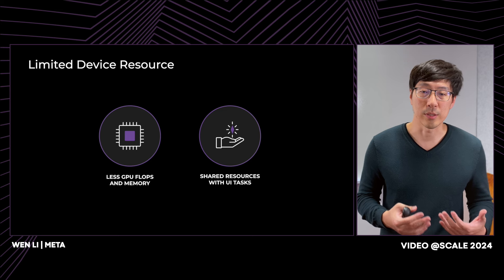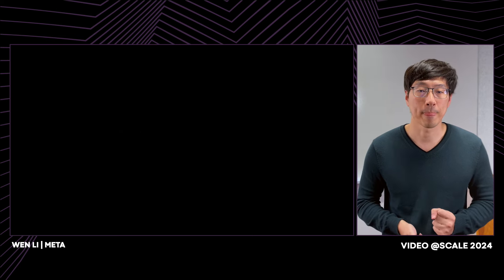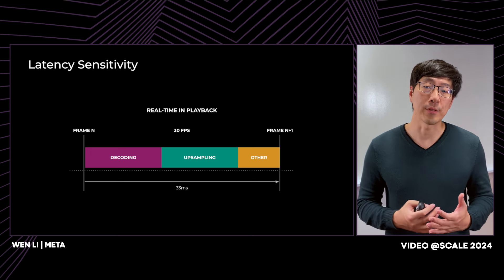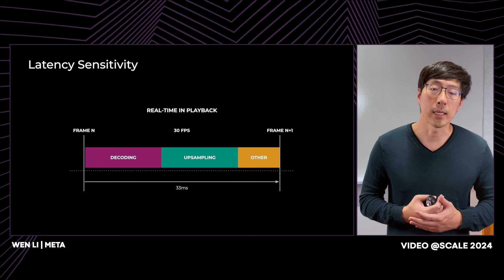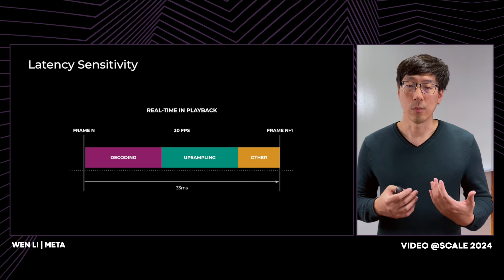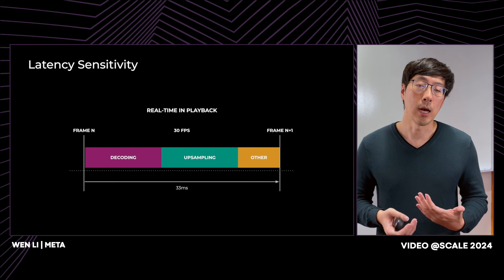These device resource constraints introduce new challenges for running advanced video upsampling models. Mobile devices are also very sensitive to latency. Given a 30fps video, there are only about 33 milliseconds between rendering two frames. If the total time of all frame operations exceeds that, the video playback will run into a frame drop. Typically, decoding a video frame takes anywhere from 1 to 20 milliseconds, leaving very little room to apply an additional post-processing filter like video super-resolution.